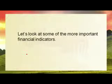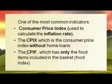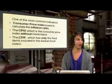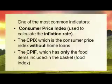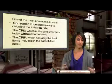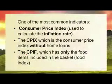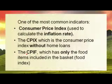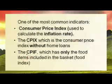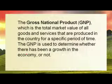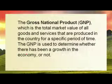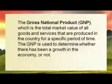Some common financial indicators include the CPI, the consumer price index, which is used to calculate inflation rate. We've got the CPIX, which is the consumer price index without home loans. We've also got the CPIF, the food index, which only accounts for food items in the basket. The gross national product, or GNP, is the total market value of all goods and services produced in the country for a specific period of time, and is used to determine whether there has been economic growth.